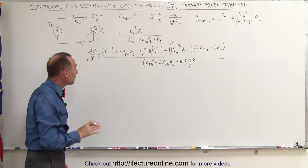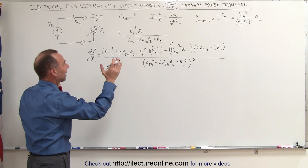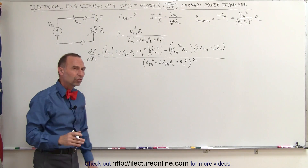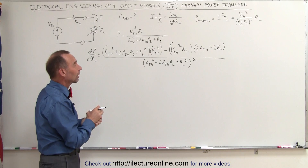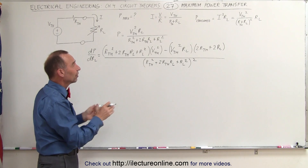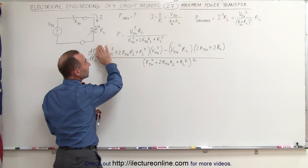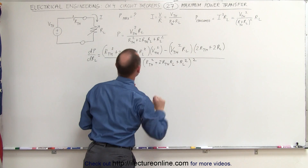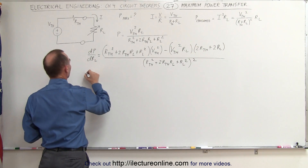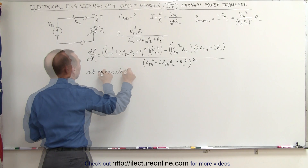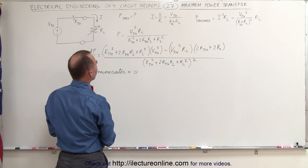Now to find the maximum power, we set that equal to zero. Since we have a quotient, setting a quotient equal to zero is only relevant when the numerator becomes zero. So what we're going to do is set the numerator equal to zero to find the maximum power, and then solve for R-sub-L.